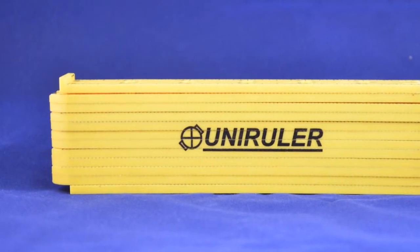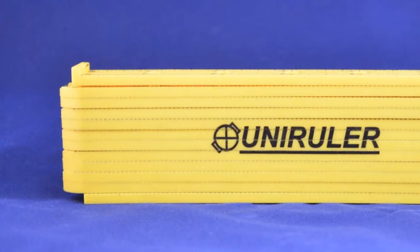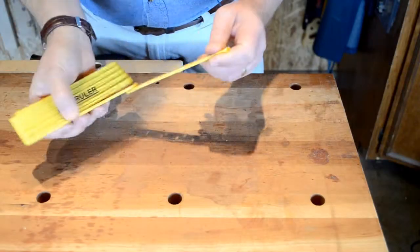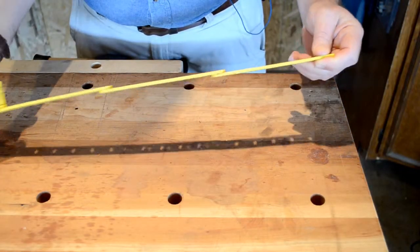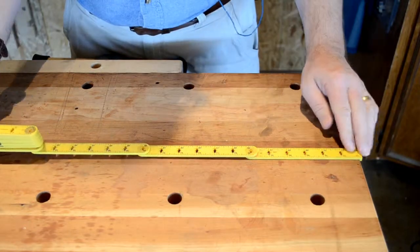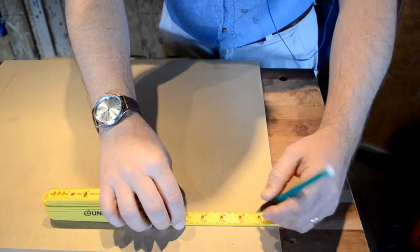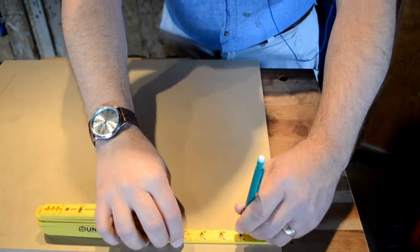The Uni-Ruler is purpose designed with one end flat and the other end with a hook built in. The hook allows for taking measurements off the end of a board like you would with a tape measure. This also allows for easy scribing off the end of a panel.